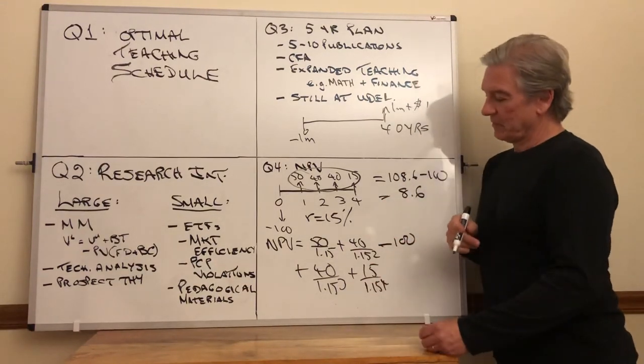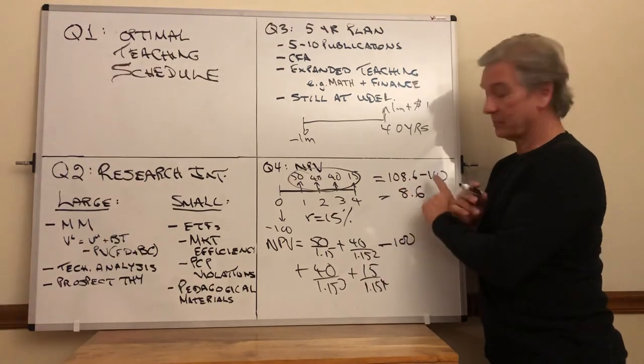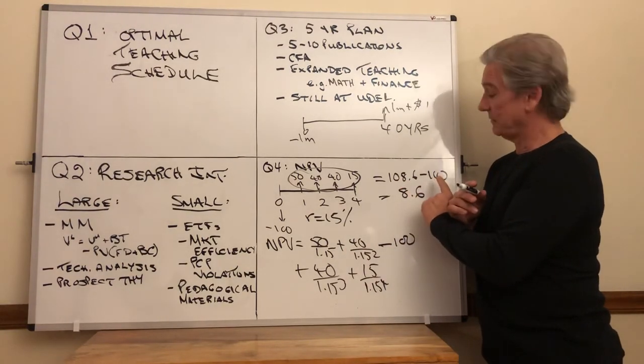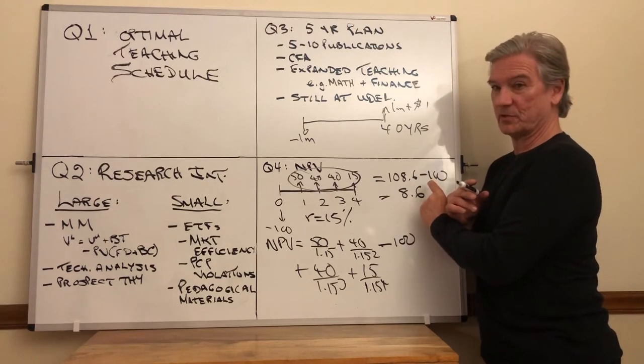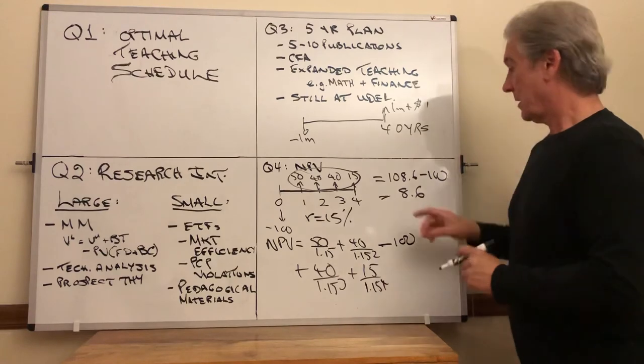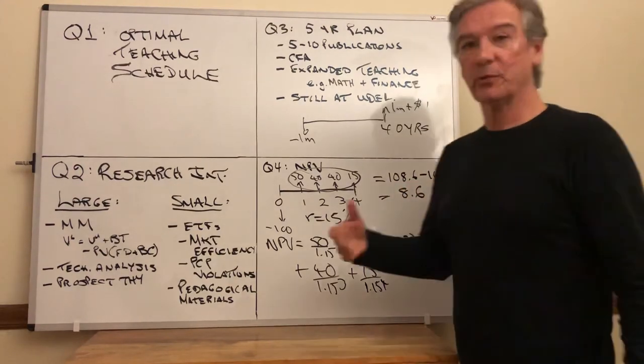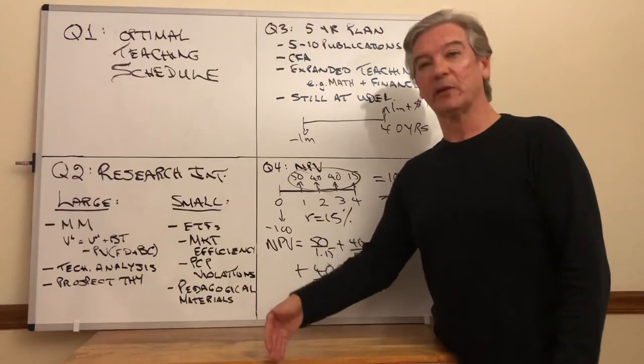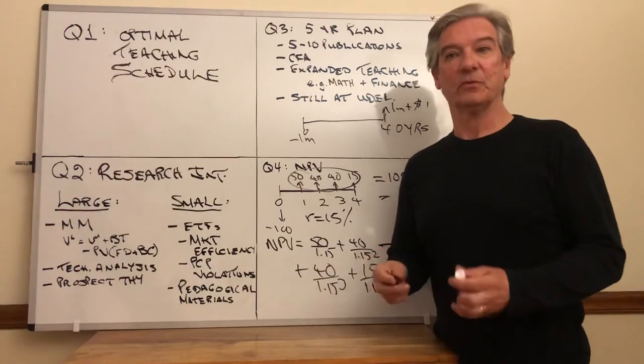This investment has a value today of 108.6 and it has a cost today of 100. It's worth more than it costs. Value minus cost: 8.6. So if you were to invest in this, it would be the equivalent of adding 8.6.